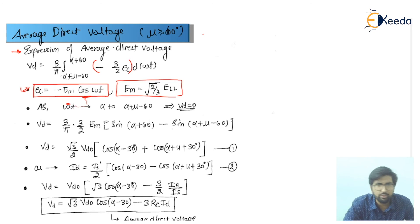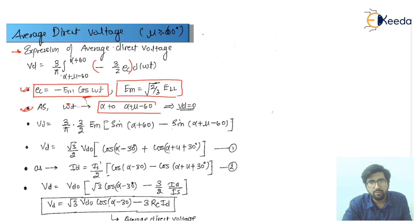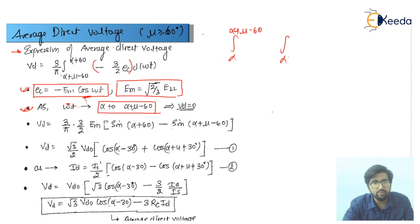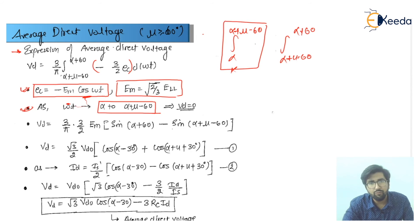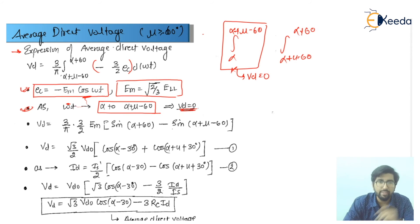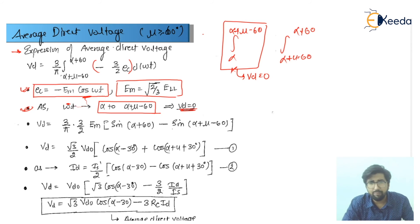One thing should come to your mind: why have we not taken the range from alpha to alpha plus mu minus 60? Because we had two ranges — alpha to alpha plus mu minus 60, and then alpha plus mu minus 60 to alpha plus 60. We have not taken the first range because in that range the value of VD is going to be zero. So why should we take it? We have already eliminated it.